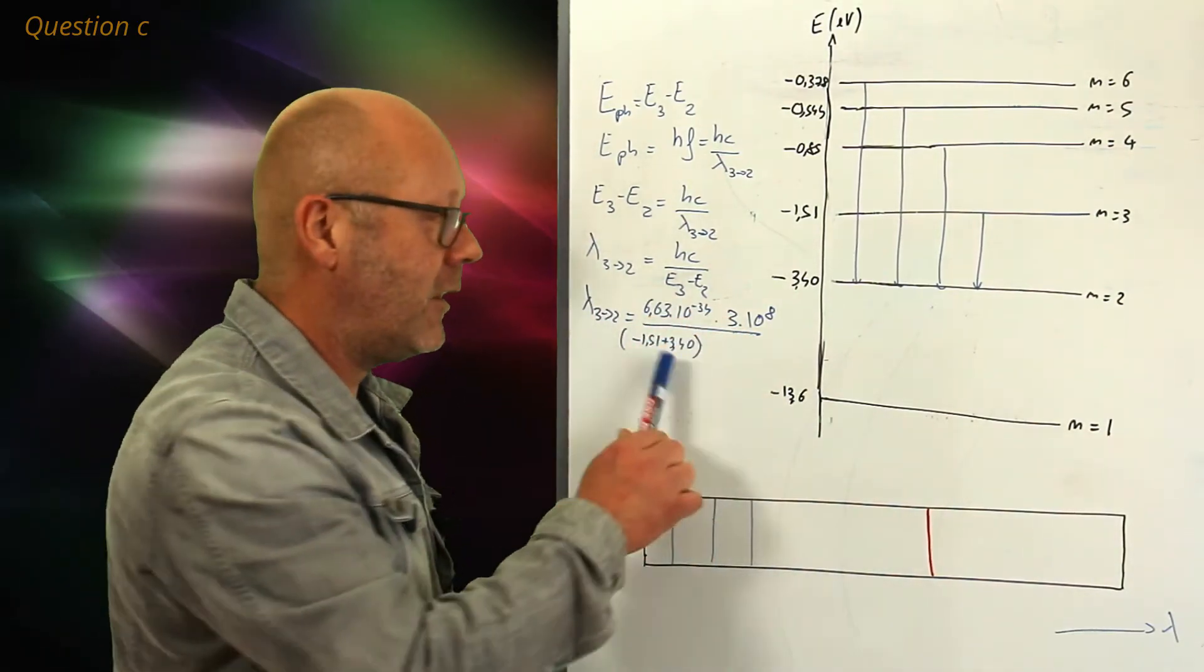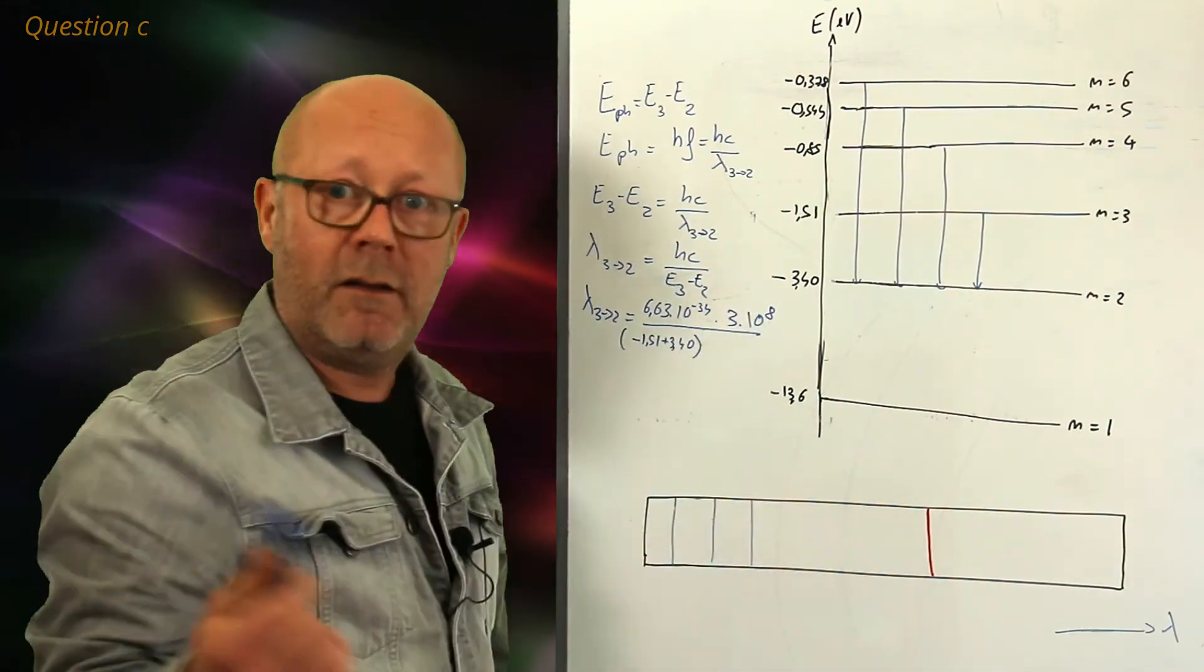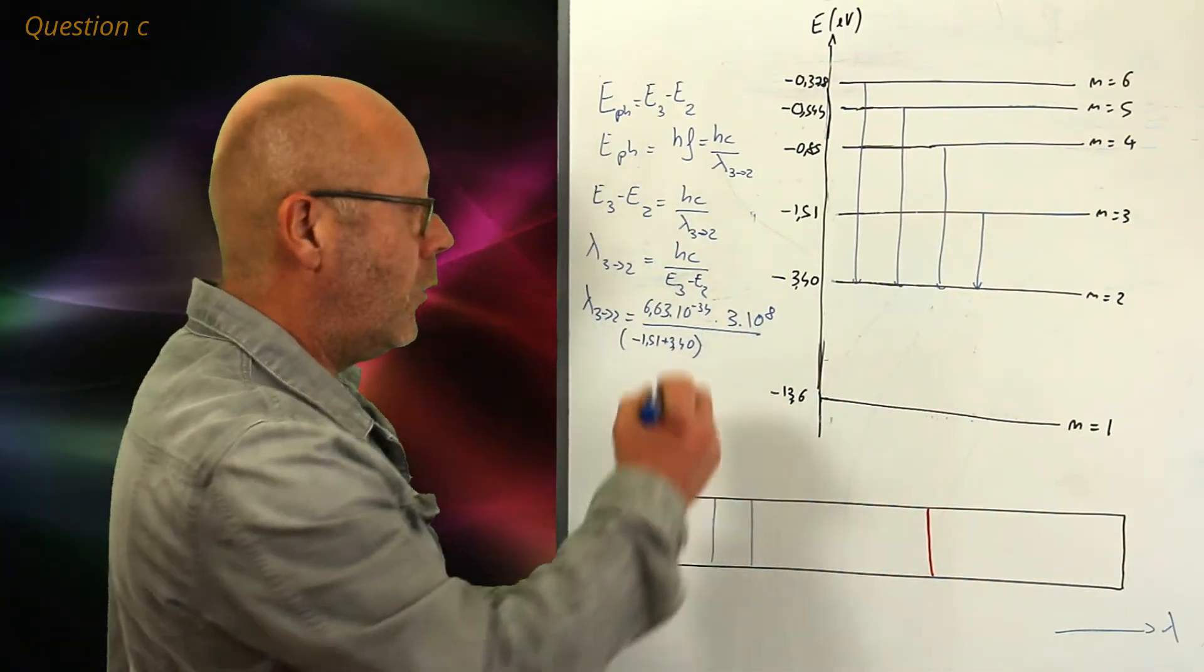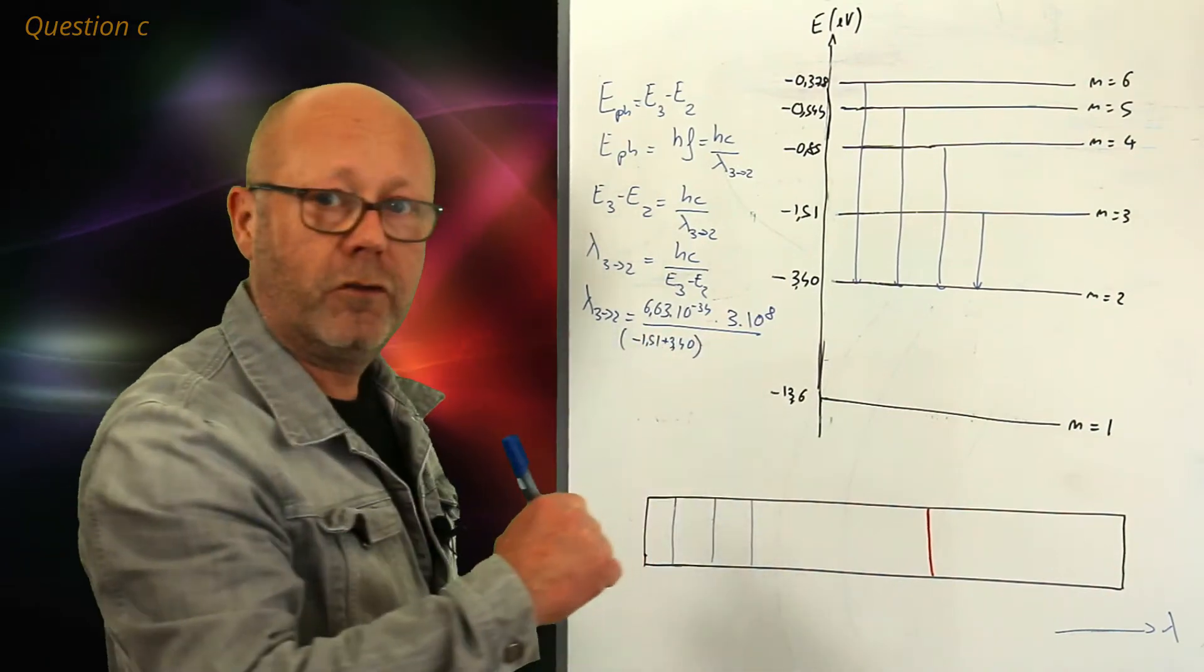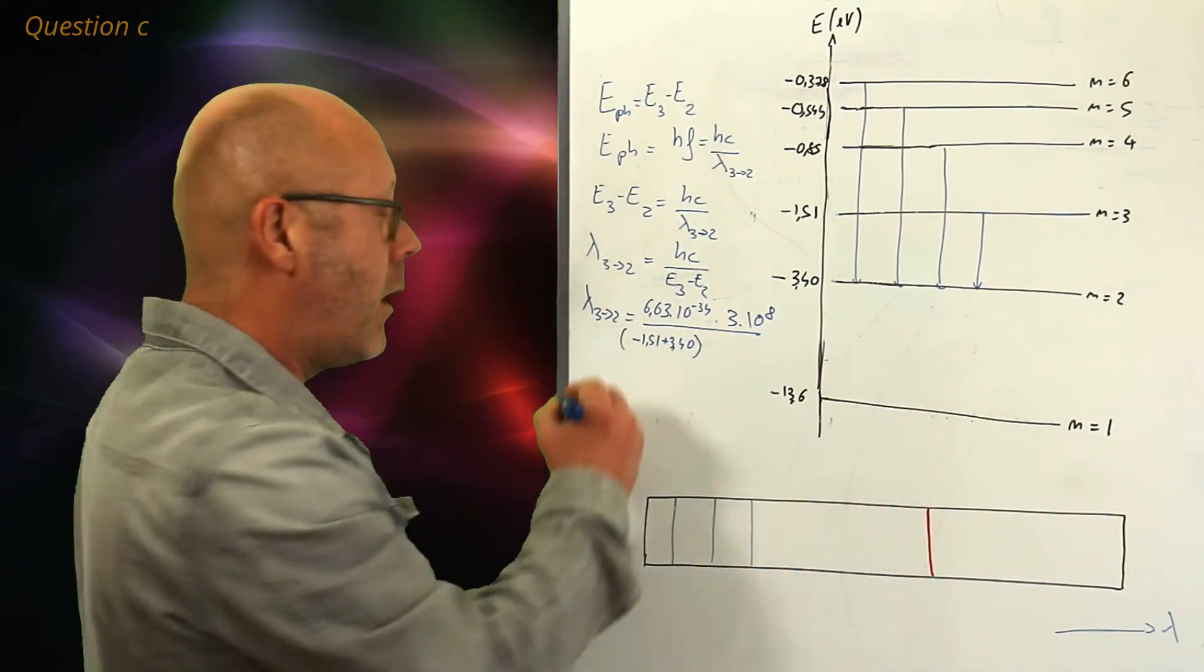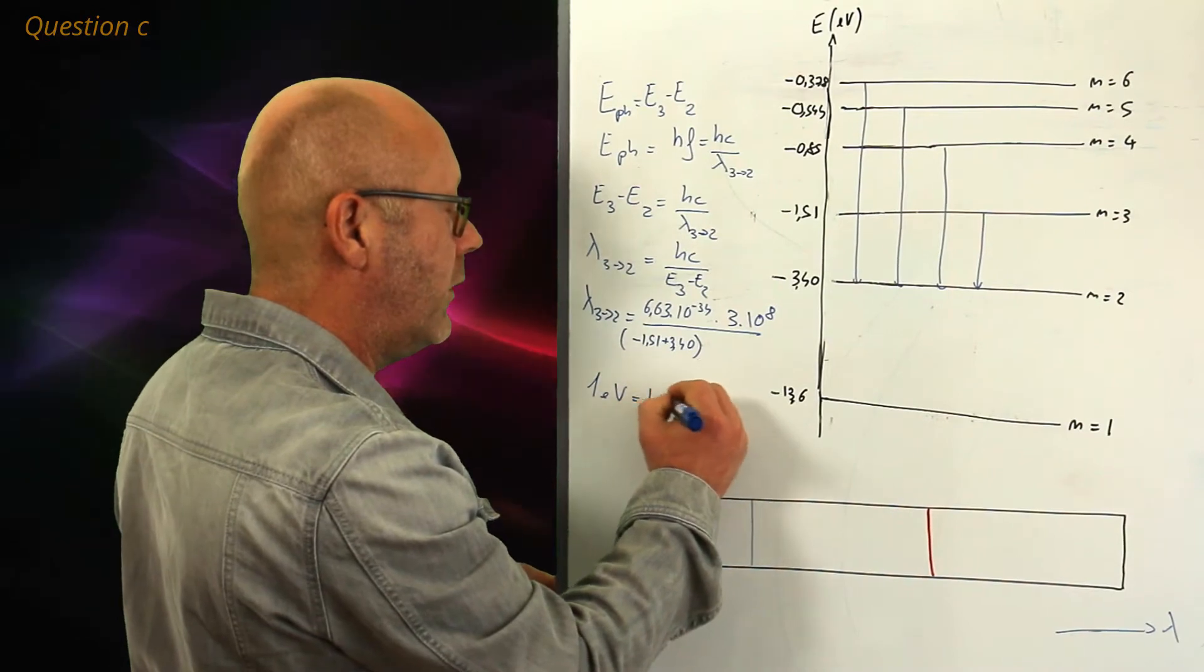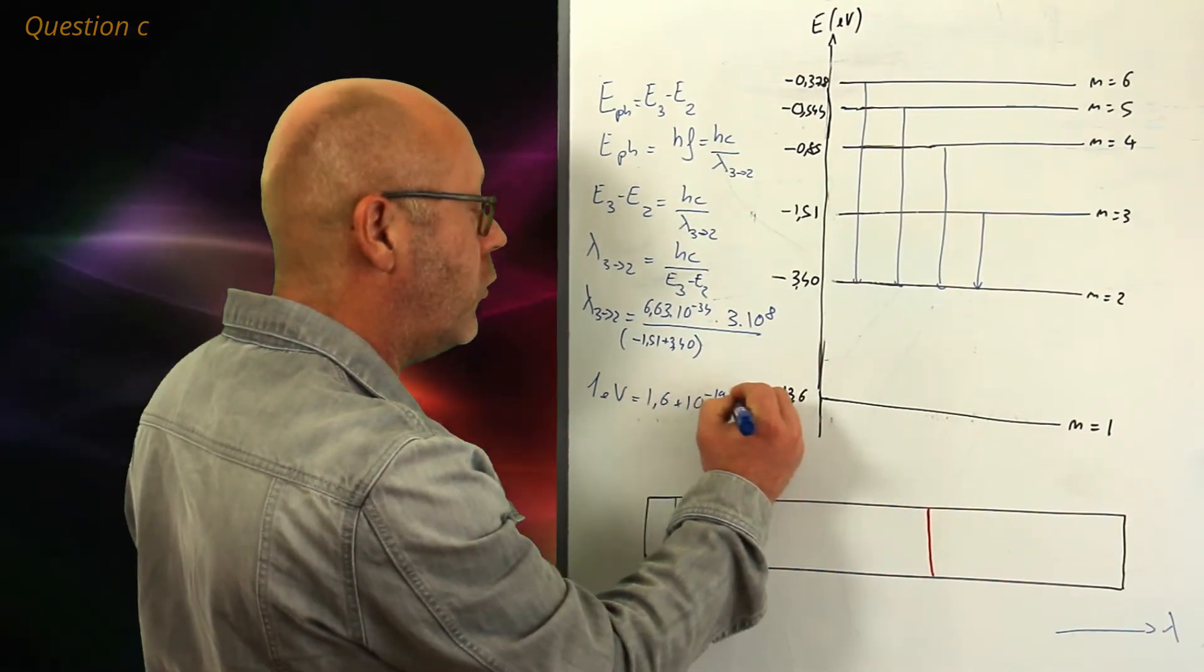Be careful, these are electron volts. Now, we need to stand in SI units, right? So, we have to convert this in joules. As a reminder, 1 electron volt is equal to 1.6 by 10 to the minus 19 joules.